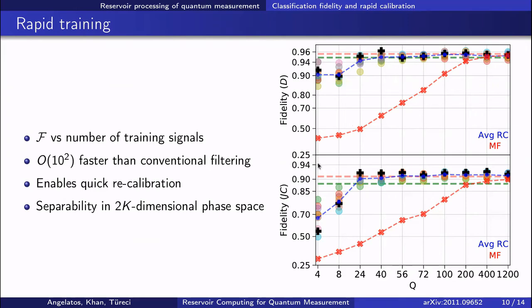You see that for a dispersive measurement, just one training signal for each initial qubit state is sufficient for accurate classification on the 1,200 measurement test set. Even for the Jaynes-Cummings system, on the order of 10 signals for each state gives effectively optimal performance. In contrast, the match filter in red only converges to the fidelity of the reservoir computer with on the order of a thousand training signals.